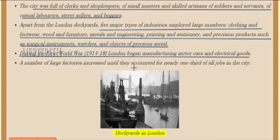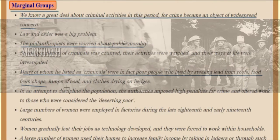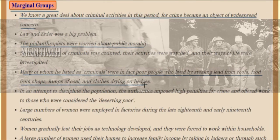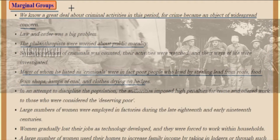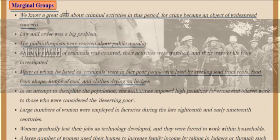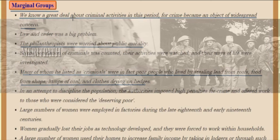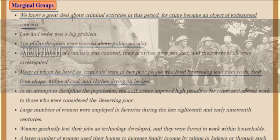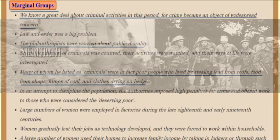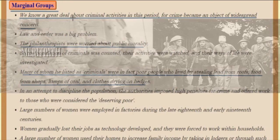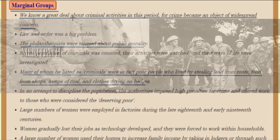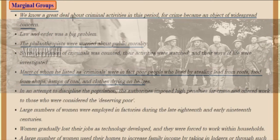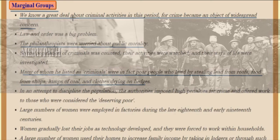During the First World War, between 1914 and 1918, London began manufacturing motor cars and electrical goods. A large number of factories increased until they accounted for nearly one-third of all the jobs in the city. We know a great deal about criminal activities in this period because crime became an object of widespread concern — law and order was a big problem.